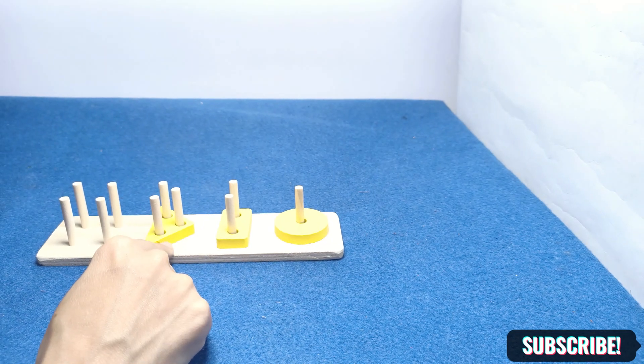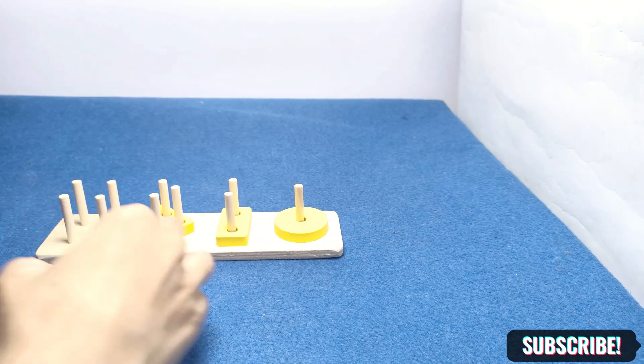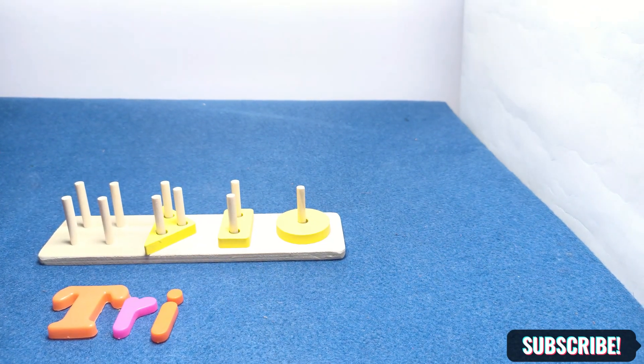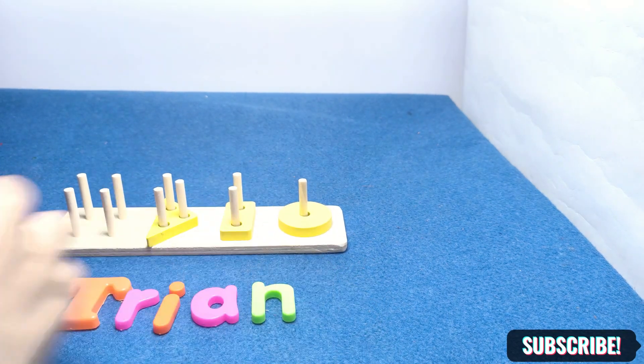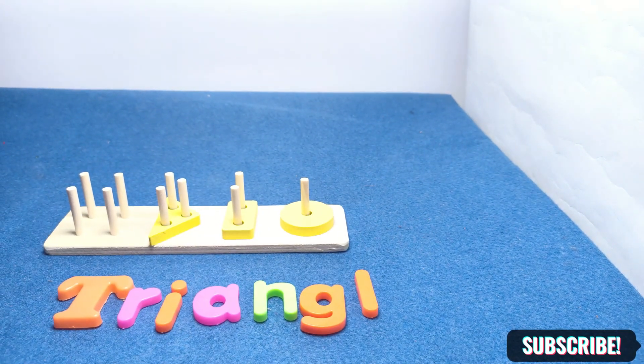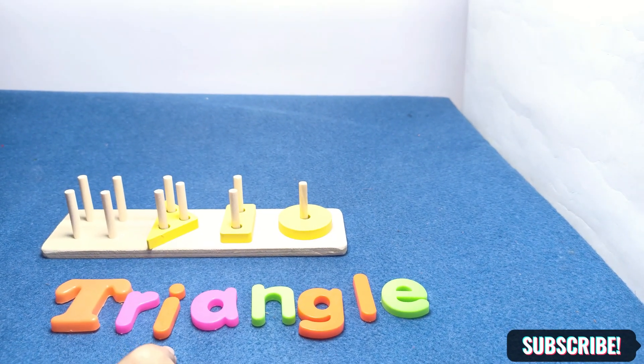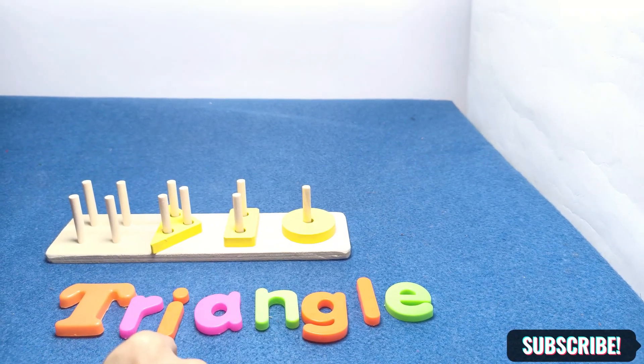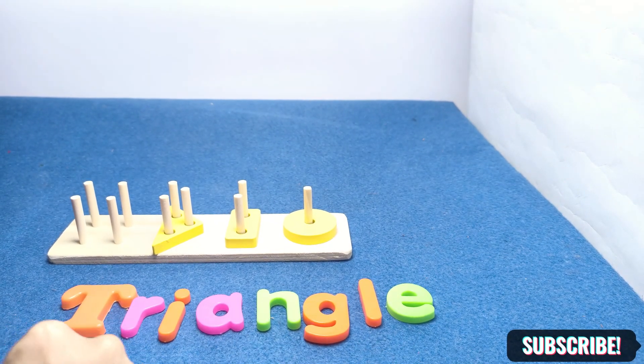Now learn the spelling of the triangle: T-R-I-A-N-G-L-E. It's a triangle. Tri means three in the angle. T-R-I, tri. A-N-G-L-E, angle. It's a triangle.